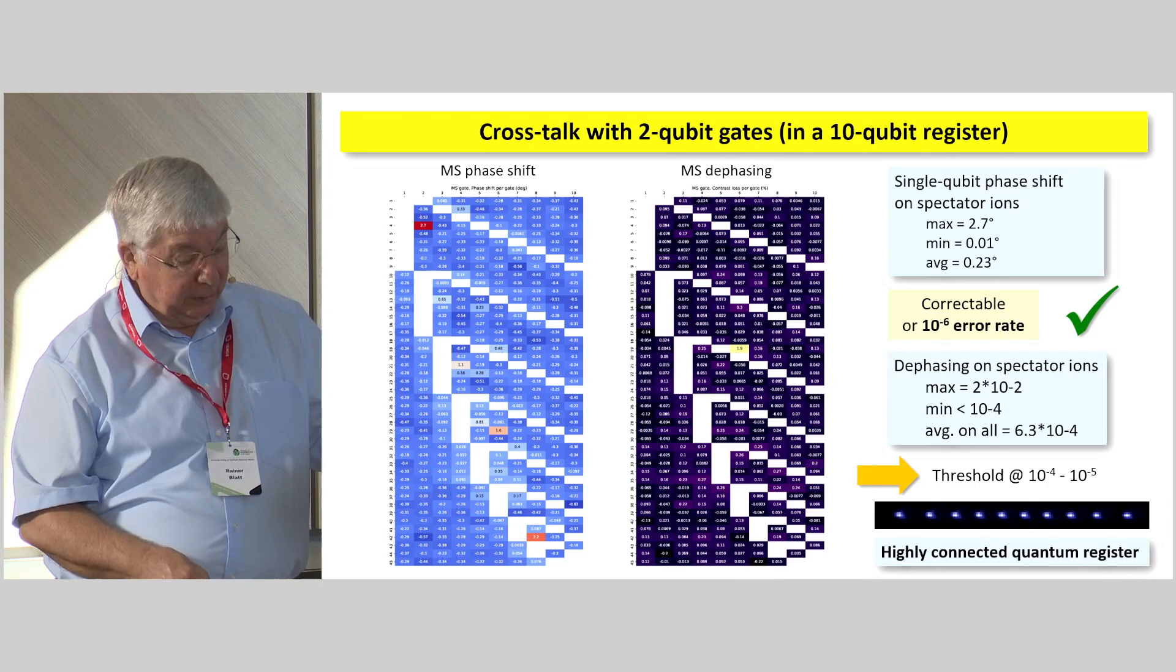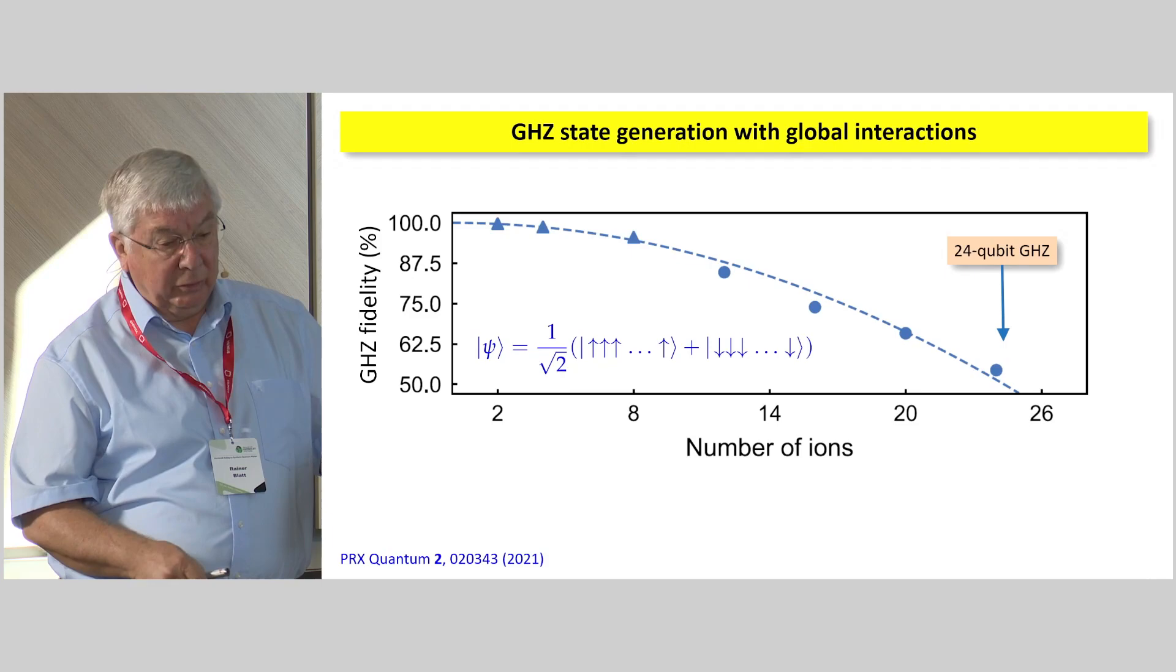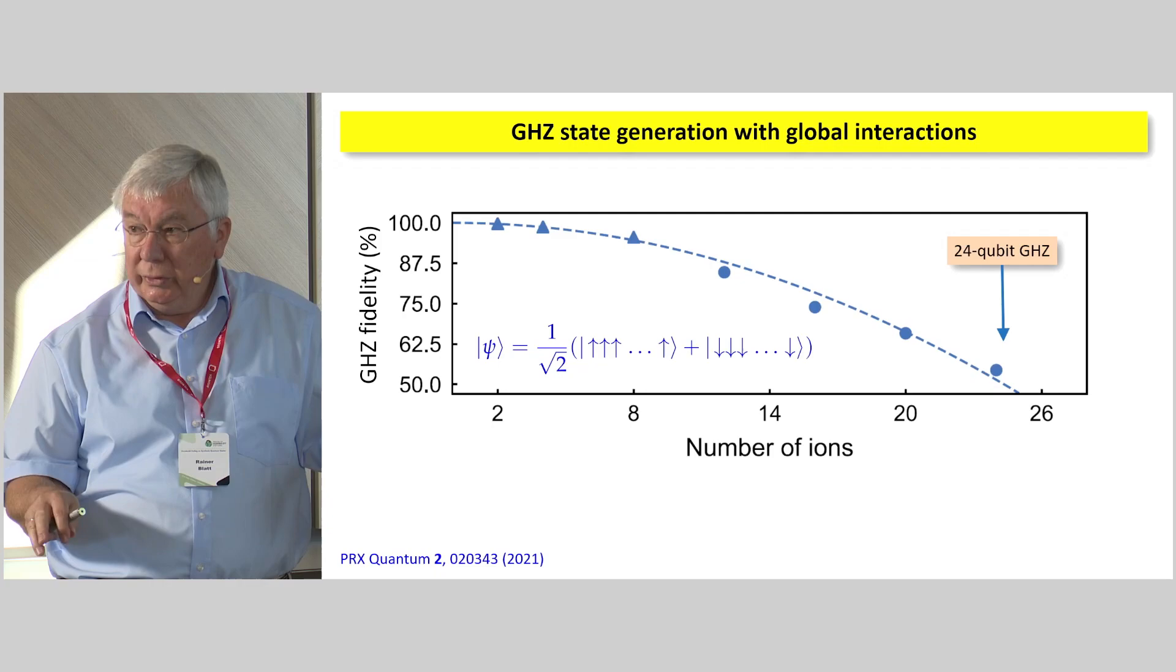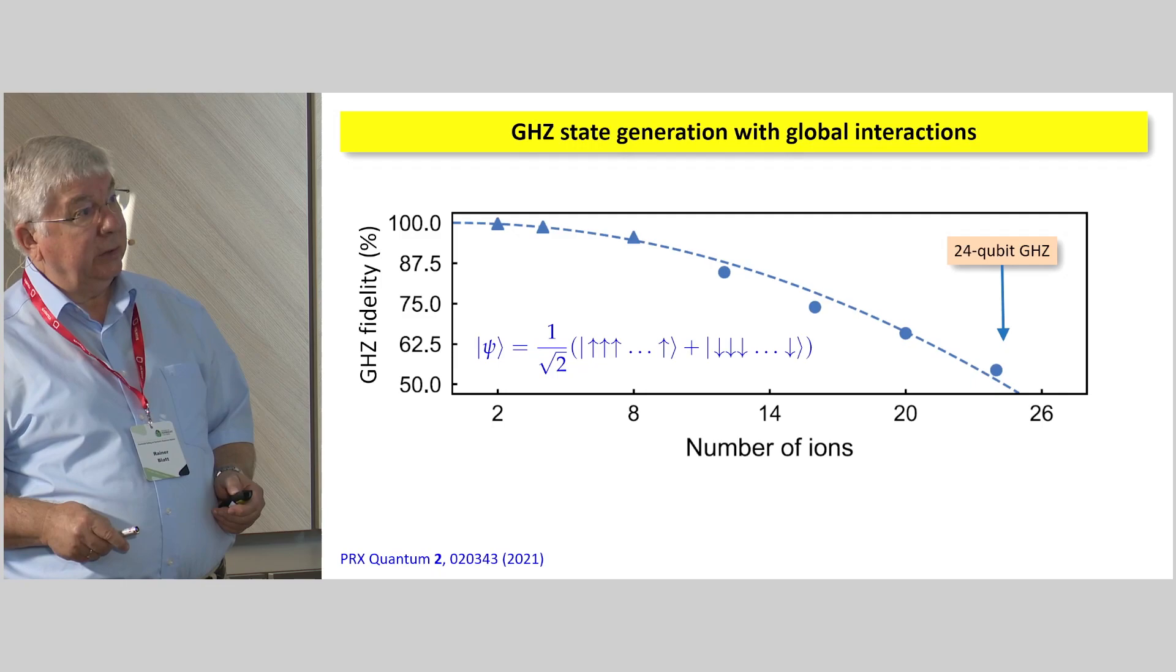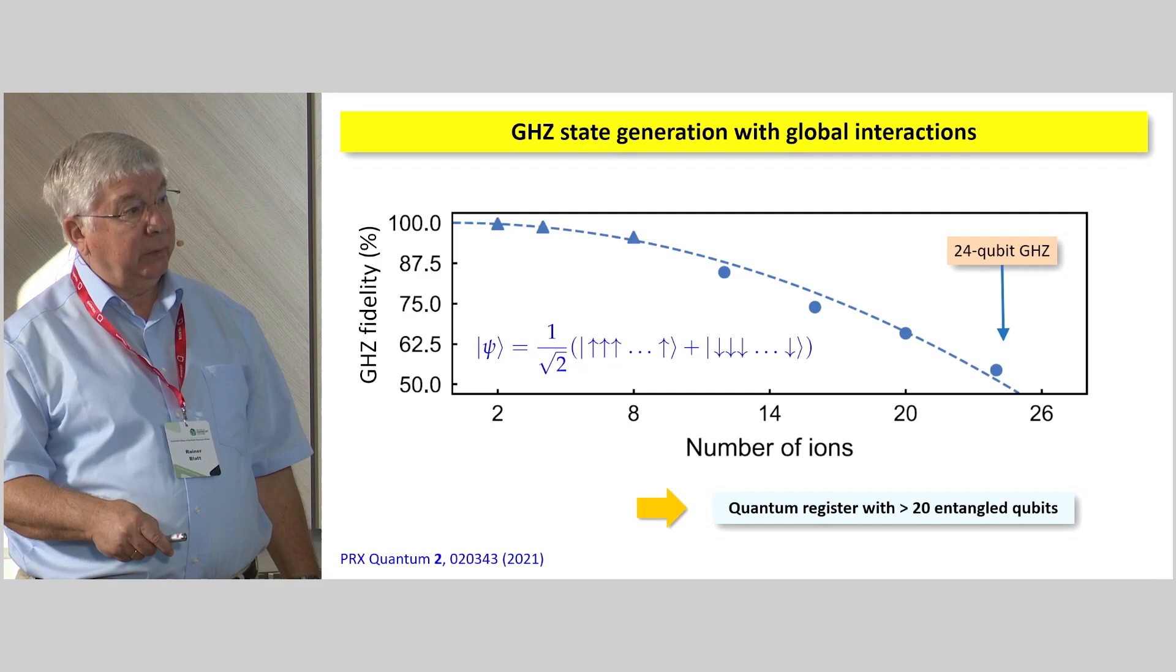That said, this is just another automatic tune-up curve, because we routinely measure in the system GHZ states, because they are the most sensitive with respect to noise and perturbations. And this just shows you a 24-qubit GHZ state. This is about 50% right here. This is one of the automatic tunes. So we have routinely quantum registers with more than 20 entangled qubits. In fact, we are routinely operating now with up to 50.